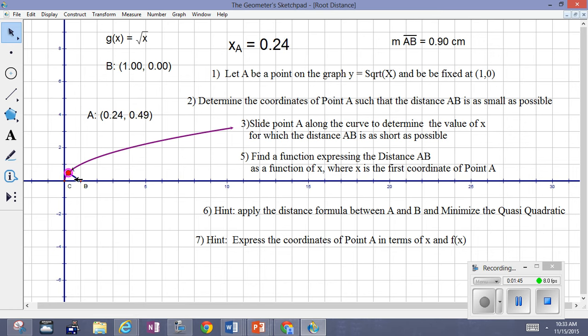We're watching the distance of AB and trying to see when that is as small as possible. I think right about x=0.5, we're going to reach our minimum distance. So we want to confirm that.